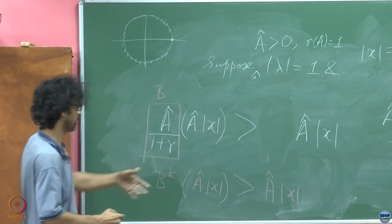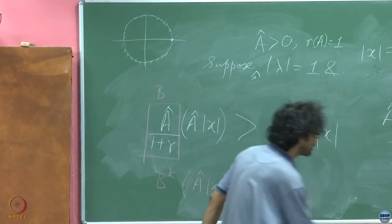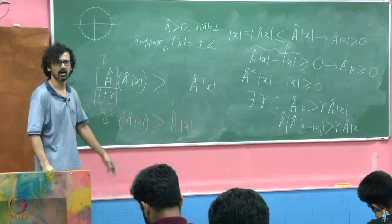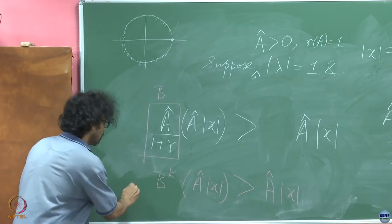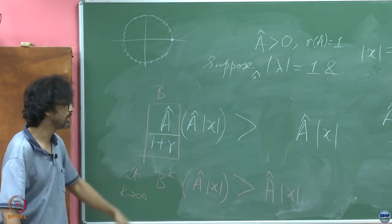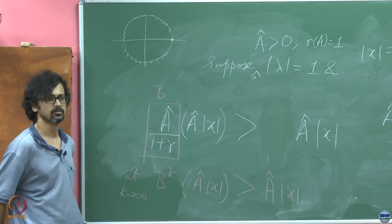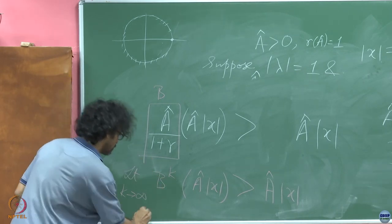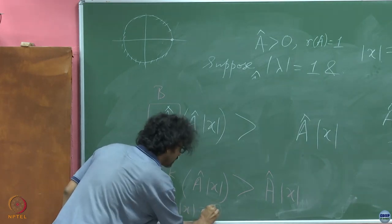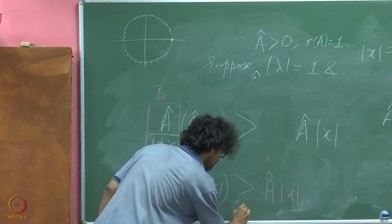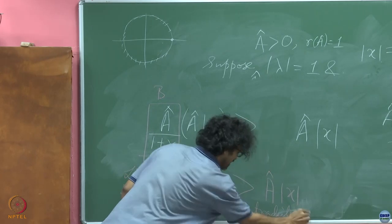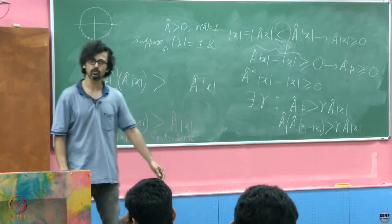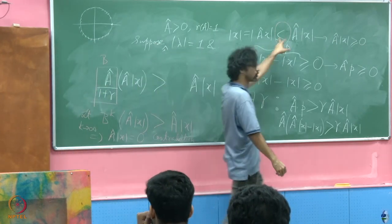It's all Â here — we have normalized everything. As k → ∞, what happens to B^k? Since (1+γ) > 1 is sitting in the denominator raised to the kth power, this goes to 0. So we'd have Â |x| = 0. But that's impossible — it's a contradiction. The contradiction stems from our assumption that the inequality was strict. So it must be an equality rather than a strict inequality.